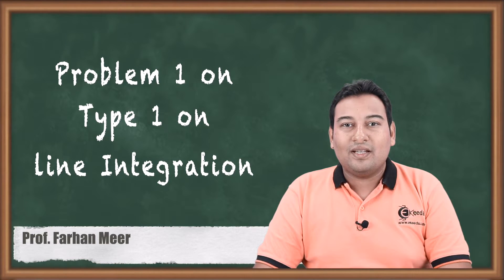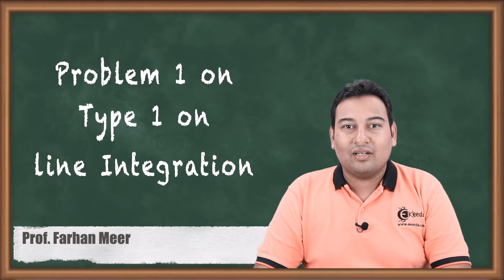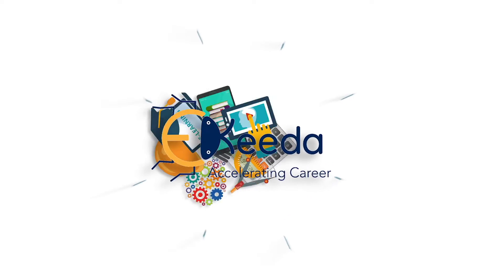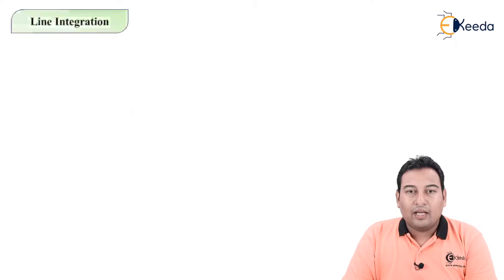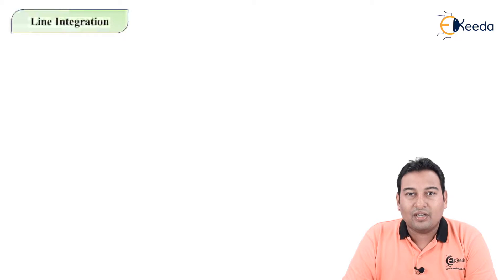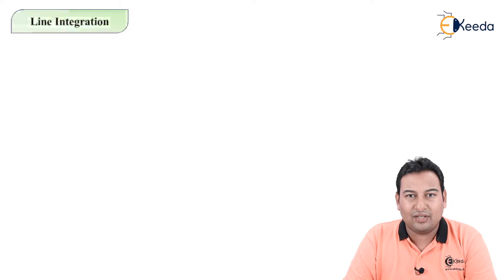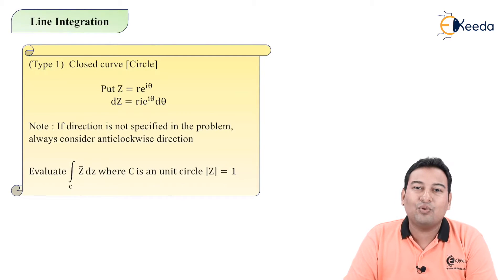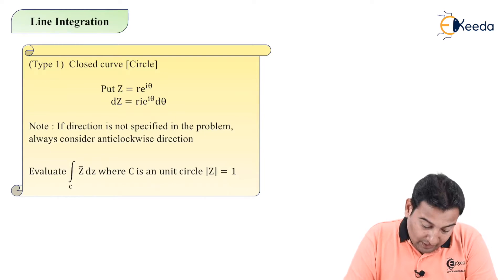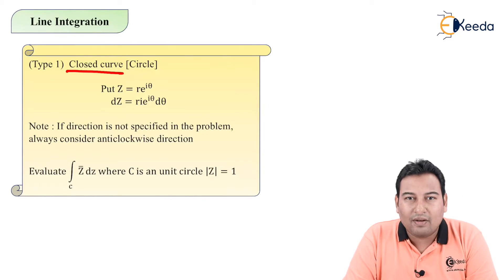Hello friends, in this video we'll discuss line integration type 1: closed curve. Till now we have discussed Laurent and Taylor series as part of complex integration. Now we are moving to the next part: line integration. Line integration is a relatively simple part and it is divided into two types — type 1: closed curve, and type 2: open curve.